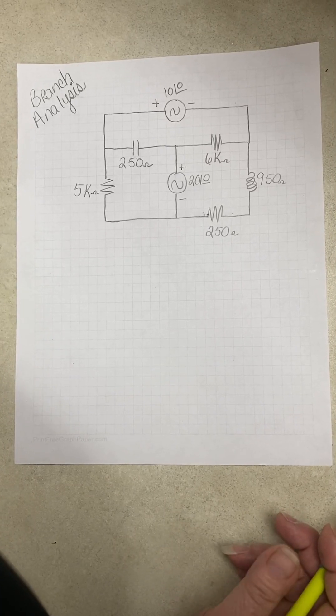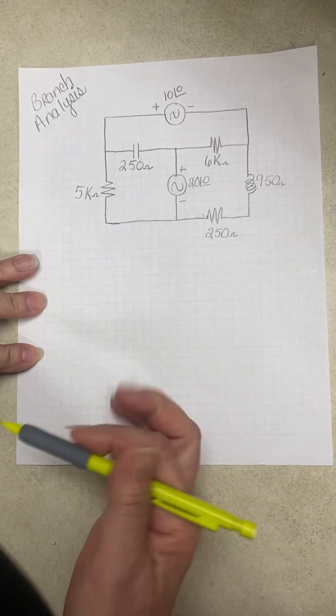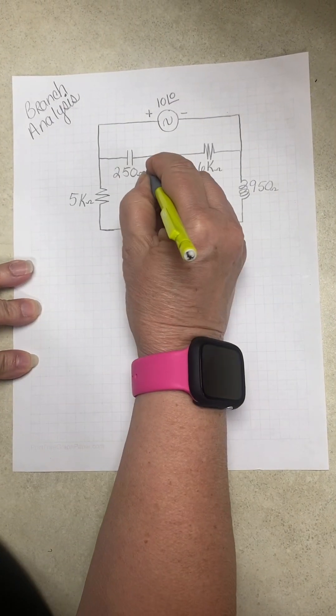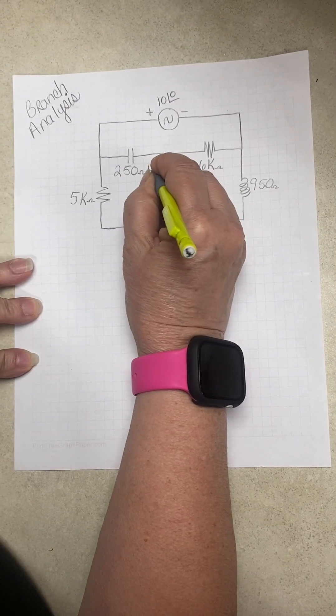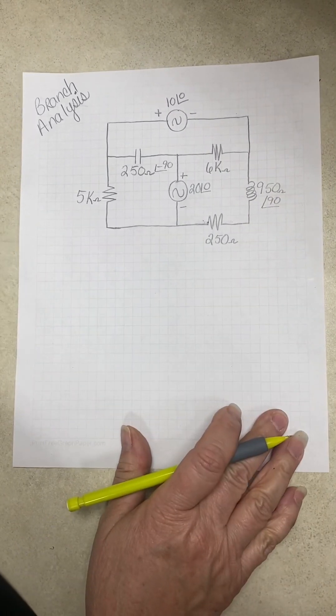Okay, so we're doing another branch analysis, and as you can see, I already gave you reactants. So just add your angles. We have an angle of negative 90 for a capacitor, and an angle of positive 90 for an inductor.